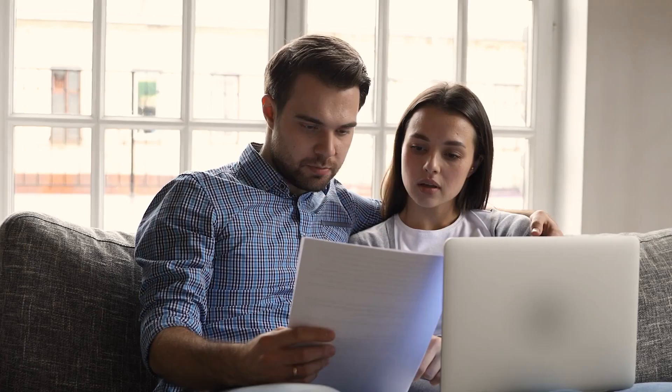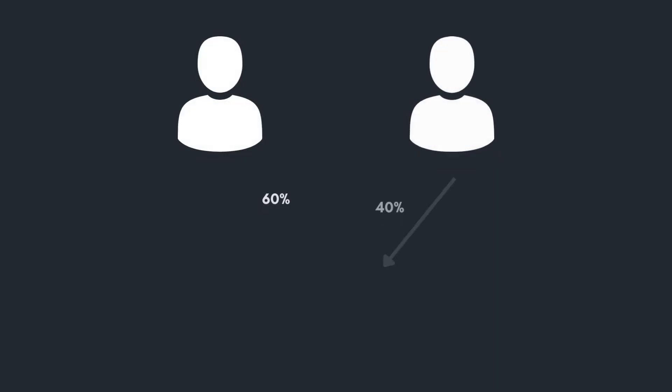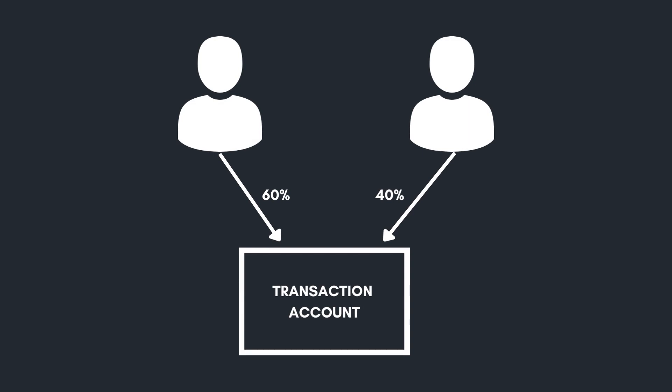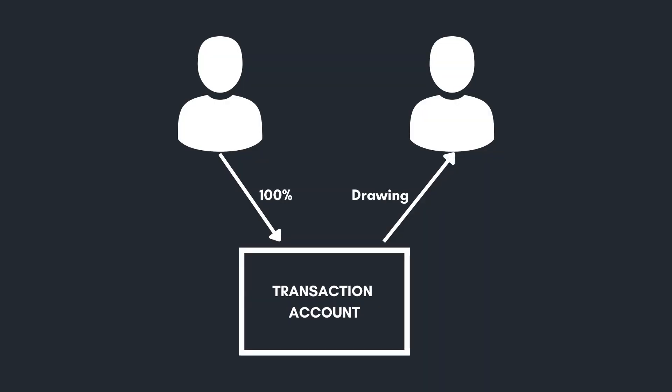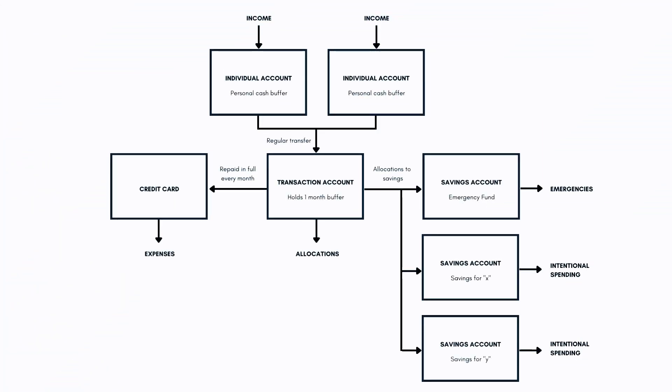If you want that little bit of financial independence from each other, you would both have your own individual transaction accounts which receive your income. From there you sit down as a couple and decide how much money to allocate into the joint transaction account on a weekly, fortnightly or monthly basis. If there is a significant earnings discrepancy or one partner doesn't work, it's okay for the income earner to put money into the joint account and the other person to take some money out into their personal account.